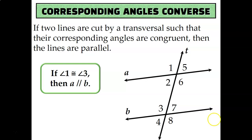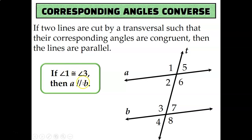In our previous lesson, we learned that corresponding angles occupy the same position. For example, angle 1 and angle 3 are corresponding because they're both in the top left-hand corner out of the four angles created by the intersection of two lines. And if the corresponding angles are congruent to each other, then you can conclude that the lines are parallel.